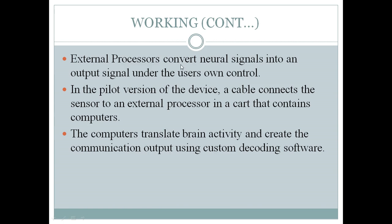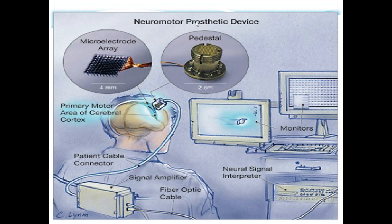The external processor converts neural signals into an output signal under the user's own control. In the pilot version, a cable connects the sensor to an external processor — a cart that contains a computer — which translates brain activity and creates a communication output using custom decoding software. The system includes the premotor area of the cerebral cortex, a microelectrode array about four millimeters in size, a pedestal with a patient cable connector, signal amplifiers, fiber optic cable, a neural signal interpreter, and monitors.